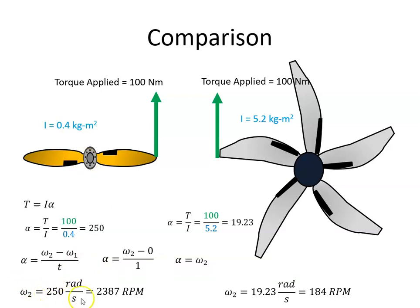For the larger propeller it will be 19.23 radians per second or 184 revs per minute. There's a big difference if we applied the same torque. This one gets up to a higher speed much quicker than this propeller, all due to moment of inertia.